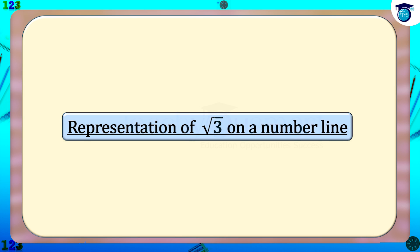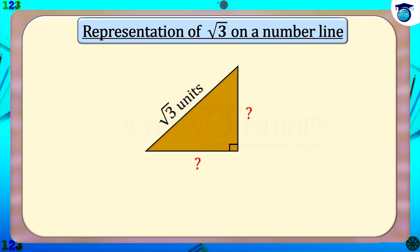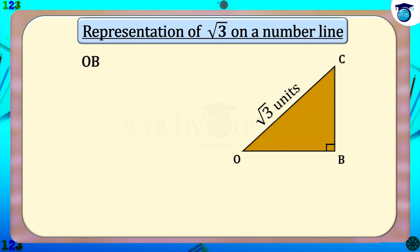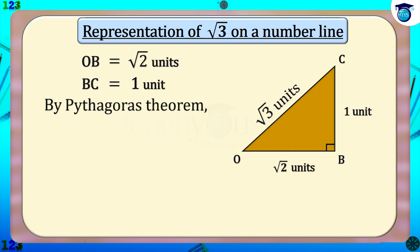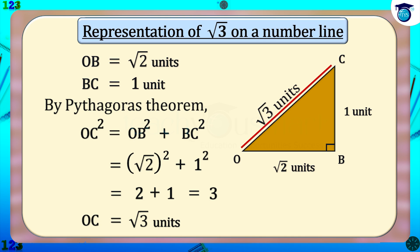For the representation of root 3 on a number line, first let's find a suitable measurement for the base and altitude of a right triangle so that the hypotenuse is root 3 units. That is possible if we take OB equals root 2 units and BC equals 1 unit. By Pythagoras theorem, OC² = OB² + BC² = (√2)² + 1² = 2 + 1 = 3, therefore OC equals root 3 units.